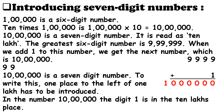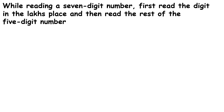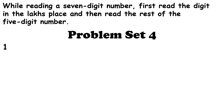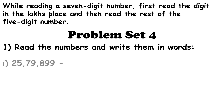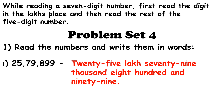To write this, one place to the left of 1,00,000 has to be introduced. In the number 10,00,000, the digit 1 is in the ten-lakhs place. While reading a 7-digit number, first read the digits in the ten-lakhs place and then read the rest. Let us start with the problem set. Read the numbers and write them in words. Our first number is 25,79,899 — 25 stands in the ten-lakhs and lakhs place, 79 in the thousands and ten-thousands place, 8 in the hundreds place, and 99 in the tens and units place.